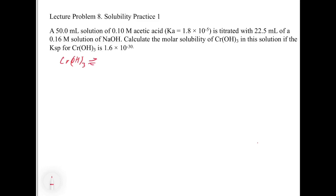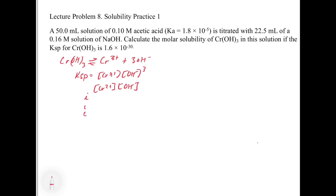Chromium hydroxide, when it dissolves, gives us Cr³⁺ plus 3 OH⁻. The Ksp expression is Ksp = [Cr³⁺][OH⁻]³. If we create an ICE table, the concentration of Cr³⁺ starts at 0 molar because there's nothing in this problem indicating an initial concentration of Cr³⁺.